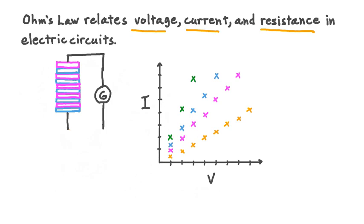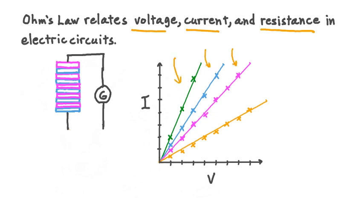Ohm found that when he plotted all these data points considering each conductor separately, and drew a line of best fit through the data points from each individual conductor, something interesting stood out. In each case, the line of best fit was truly a line with a constant slope, and that line passed through the origin. Ohm's insight was to notice that this implied a very particular relationship: the current in the circuit was directly proportional to the voltage across it.